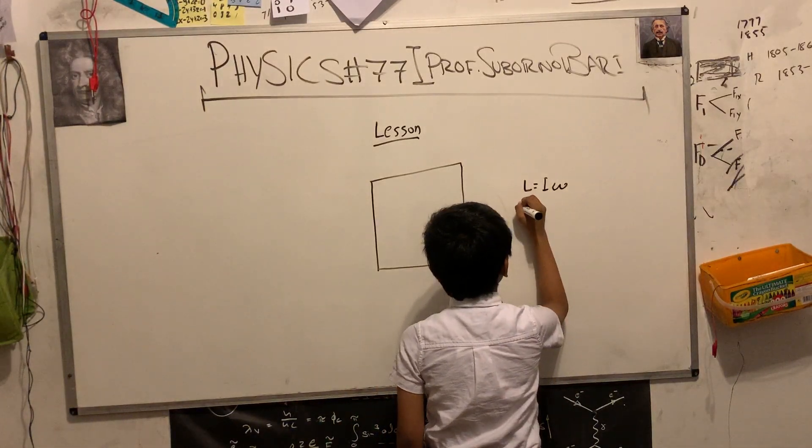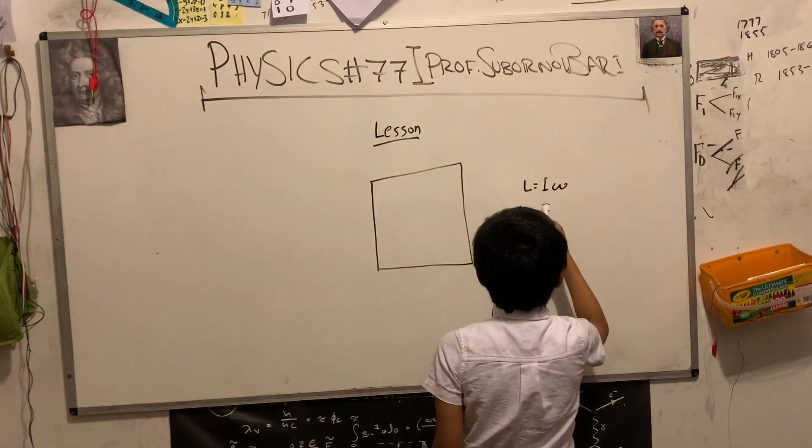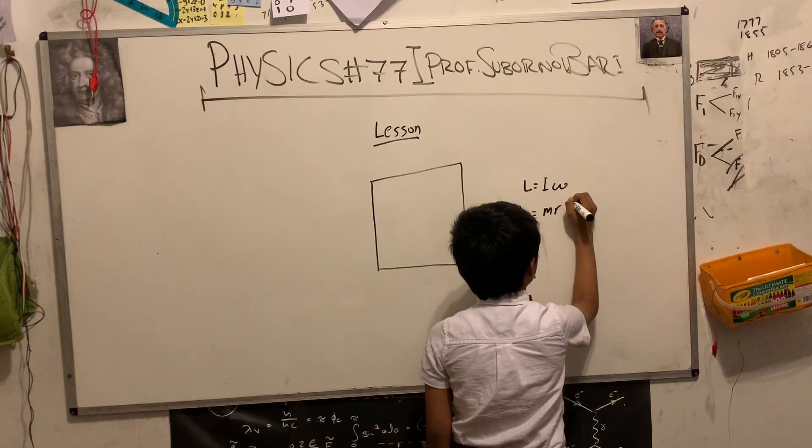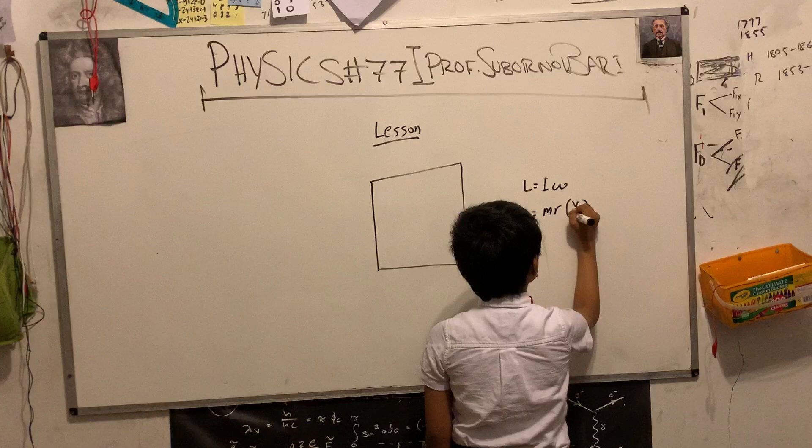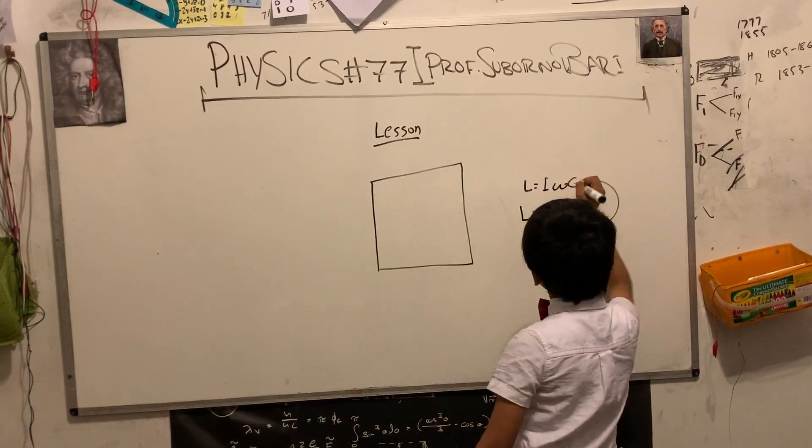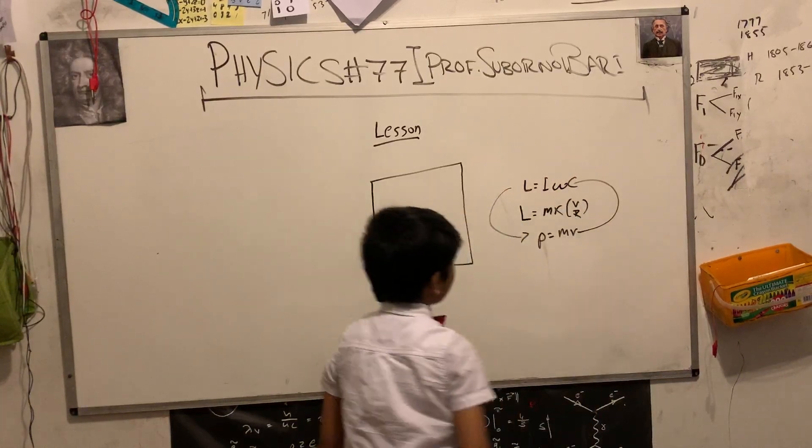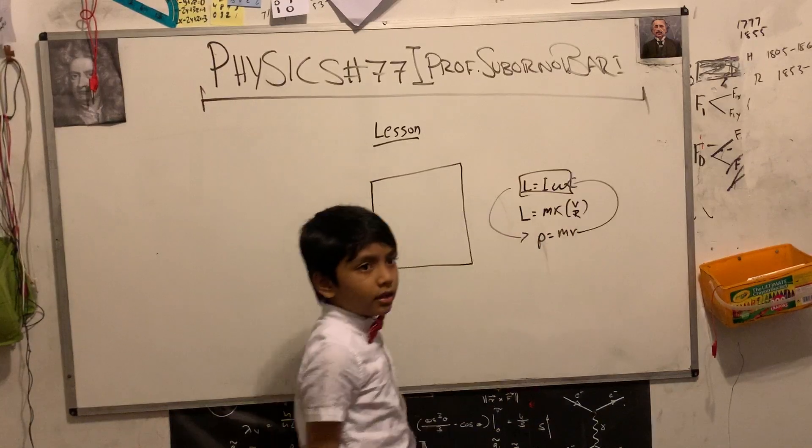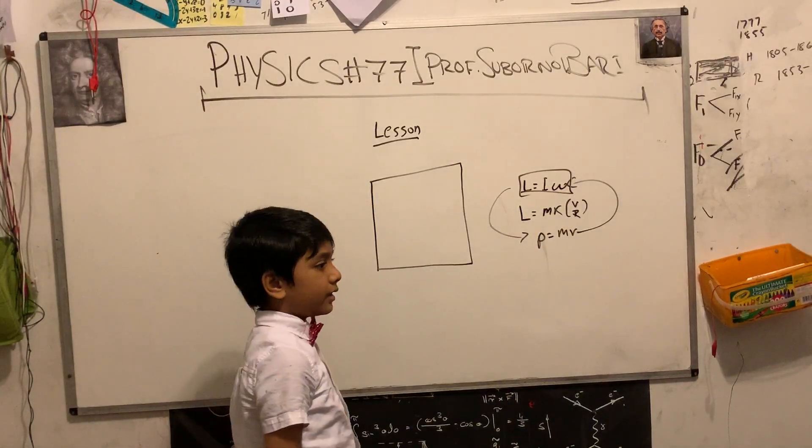Let's see if we can prove. We can simplify I m r and then omega z over r. Now we get the original equation. That means that this is the true equation for angular momentum.